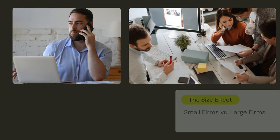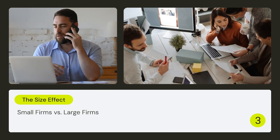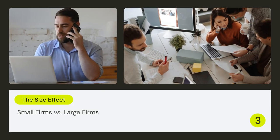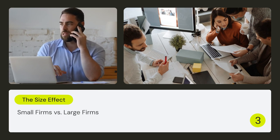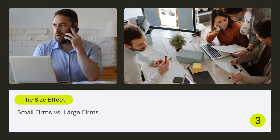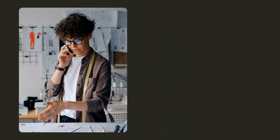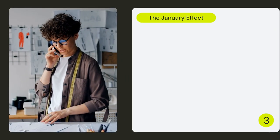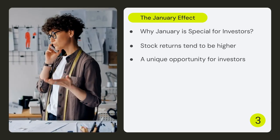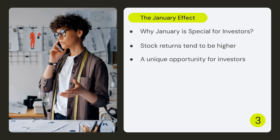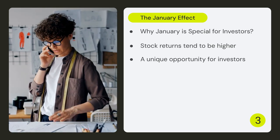Anomalies, like the size effect, challenge traditional finance theories. Historically, smaller firms have outperformed larger ones, especially in January. The January effect is another anomaly where stock returns tend to be higher in January compared to other months, offering a unique opportunity for investors.